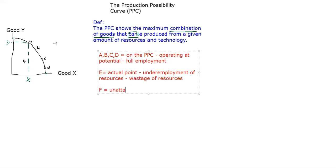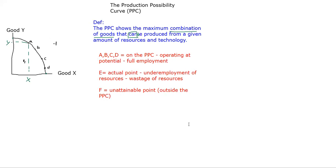Point F is your unattainable point. Even if you're perfectly efficient and make full use of all resources, you can operate on the frontier, but you'll never reach points outside the PPC. Those are unattainable points because it's outside the PPC. These unattainable points could become attainable in the future if your amount of resources and technology changes - we'll look at ways you can shift your PPC.